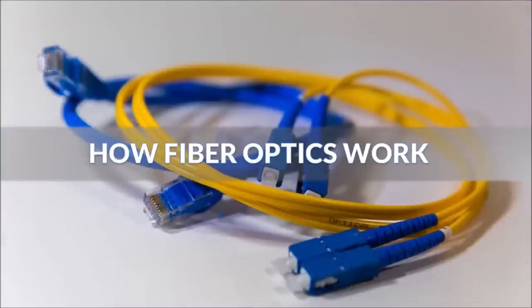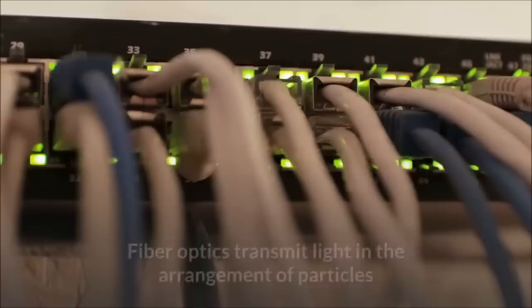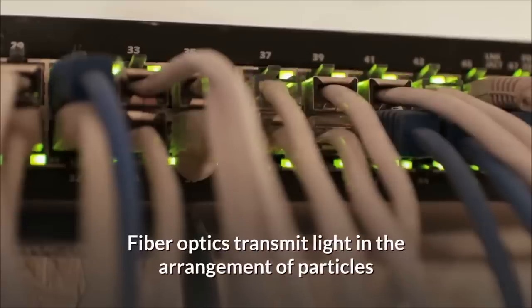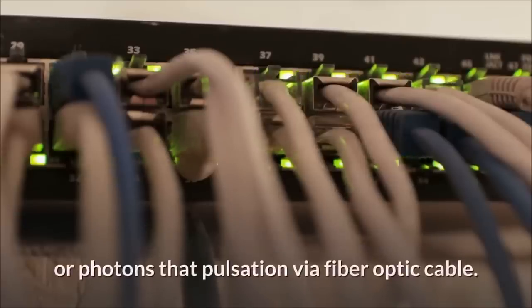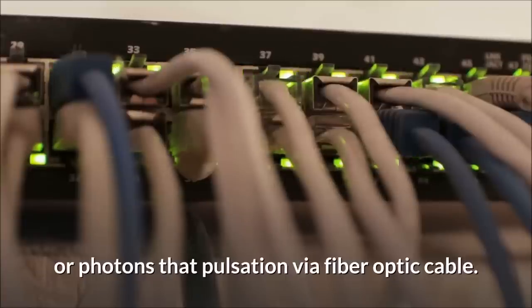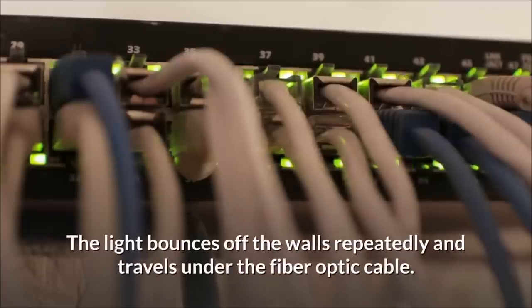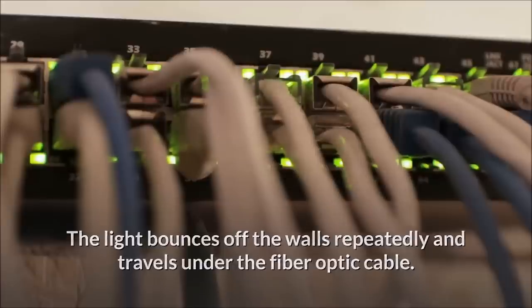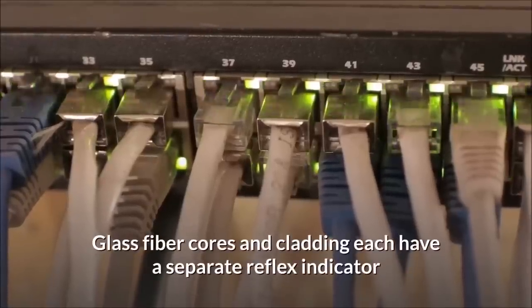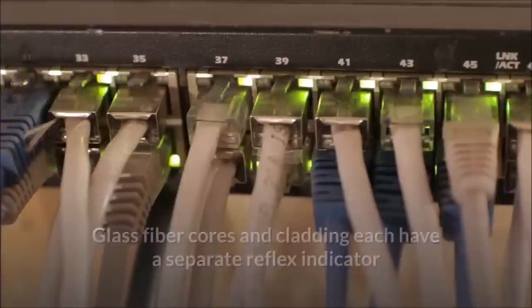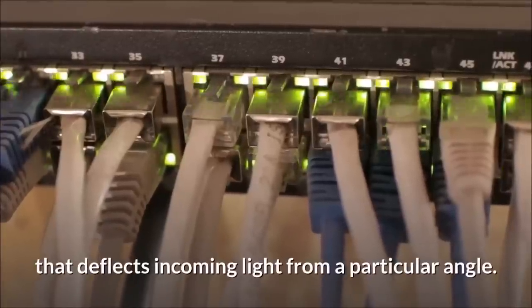How fiber optics works. Fiber optics transmit light in the arrangement of particles or photons that pulsate via fiber optic cable. The light bounces off the walls repeatedly and travels under the fiber optic cable. Glass fiber cores and cladding each have a separate refractive indicator that deflects incoming light from a particular angle.